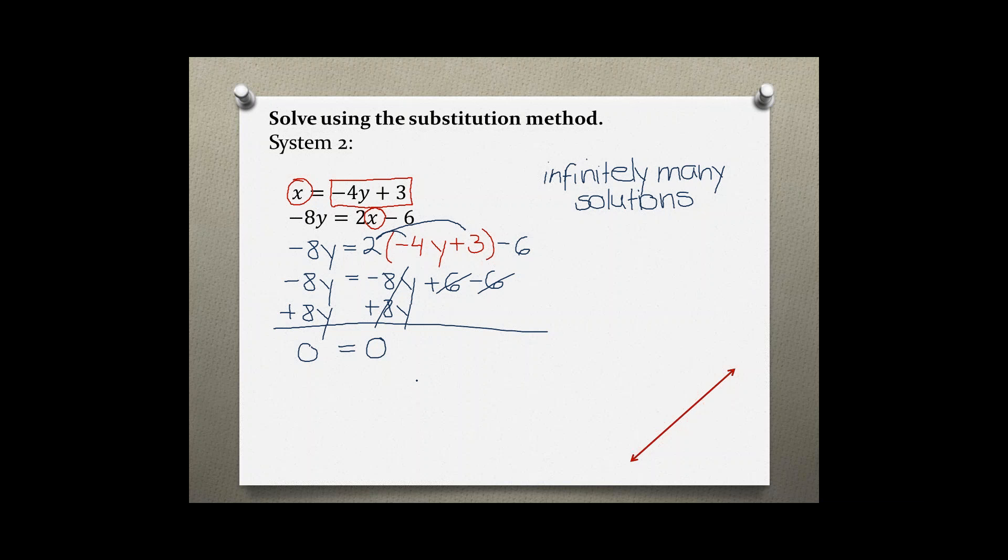You do not necessarily need to get 0 equals 0 as long as you have a true statement. For example 5 equals 5 or negative 3 equals negative 3. They are all having the same solution which means infinitely many. So as long as you are getting a true statement the solution would be infinitely many solutions.